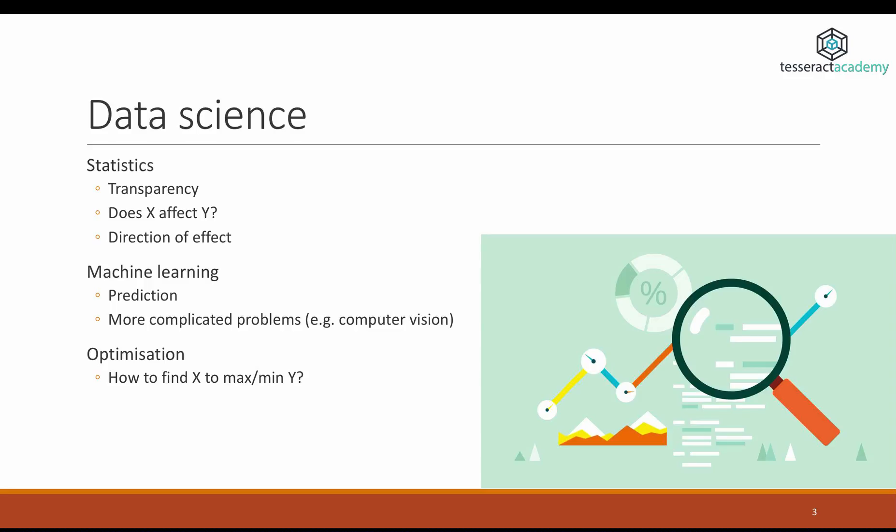You basically sacrifice transparency for improved power in prediction. Also, machine learning is very good in dealing with complicated problems, such as computer vision and audio, problems where you have lots and lots of data, lots and lots of variables.